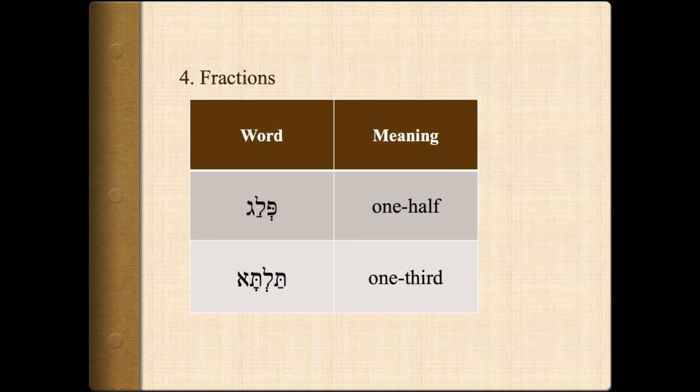There are also a couple of fractions that occur in Biblical Aramaic: Palag, meaning one half, and Talta, meaning one third. This occurs in the context where it talks about Daniel and his friends being given a third of the kingdom each, or the kingdom being divided in three.